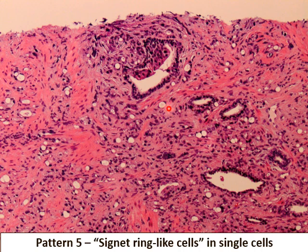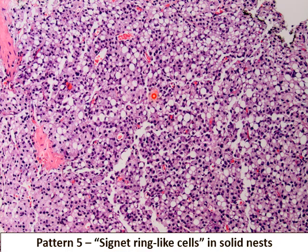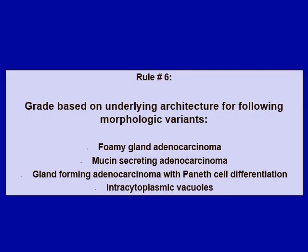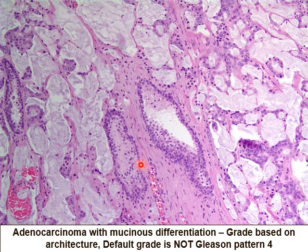Signet ring cells seen in a single-cell and nest pattern are considered Gleason pattern five. Rule number six is that certain morphological variations should be graded based on underlying architecture, including foamy gland adenocarcinoma, mucin-secreting adenocarcinoma, gland-forming adenocarcinoma with Paneth cell differentiation, and tumors showing intracytoplasmic vacuoles. Mucin-secreting adenocarcinoma showing extracellular lakes of mucin is no longer a default pattern four — you should grade based on underlying architecture. An example like this would be graded as 3+4 based on some glands showing a fusion pattern.